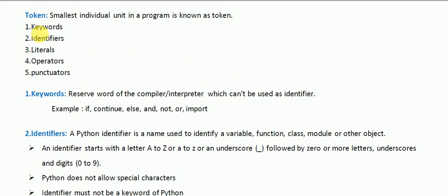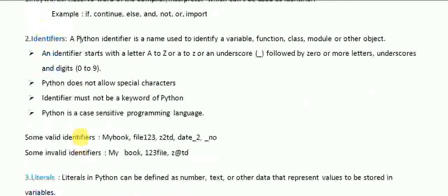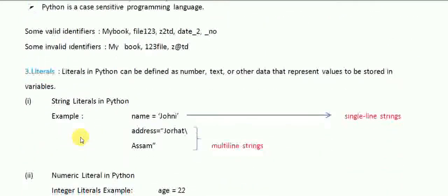In the last tutorial we learned about tokens and some types like keywords, identifiers, and literals. In this tutorial we will learn about literals. Literals in Python can be defined as numbers, text, or other data that represent values to be stored in variables.